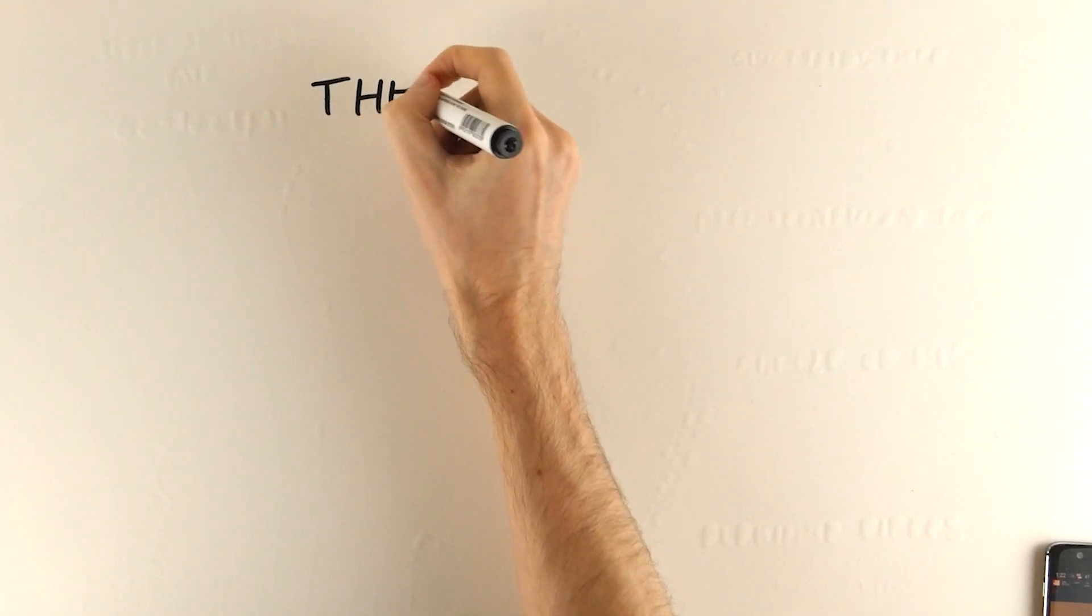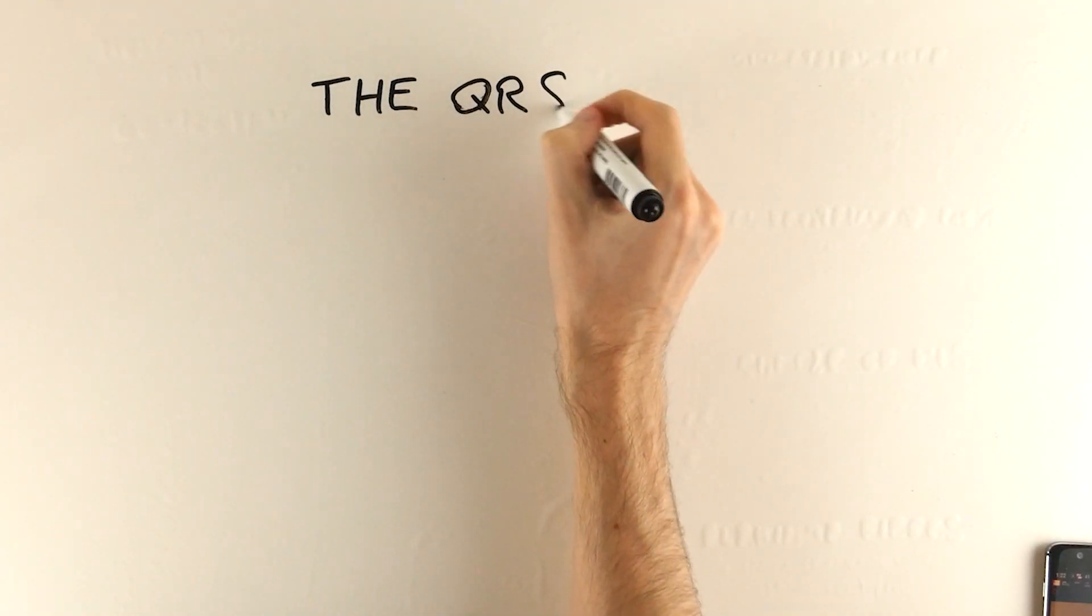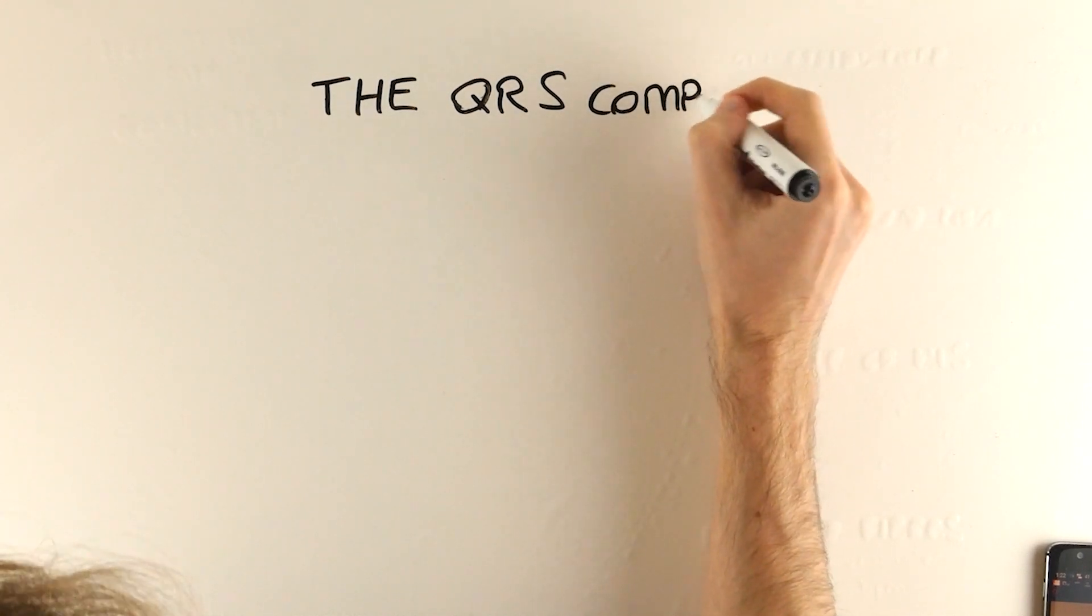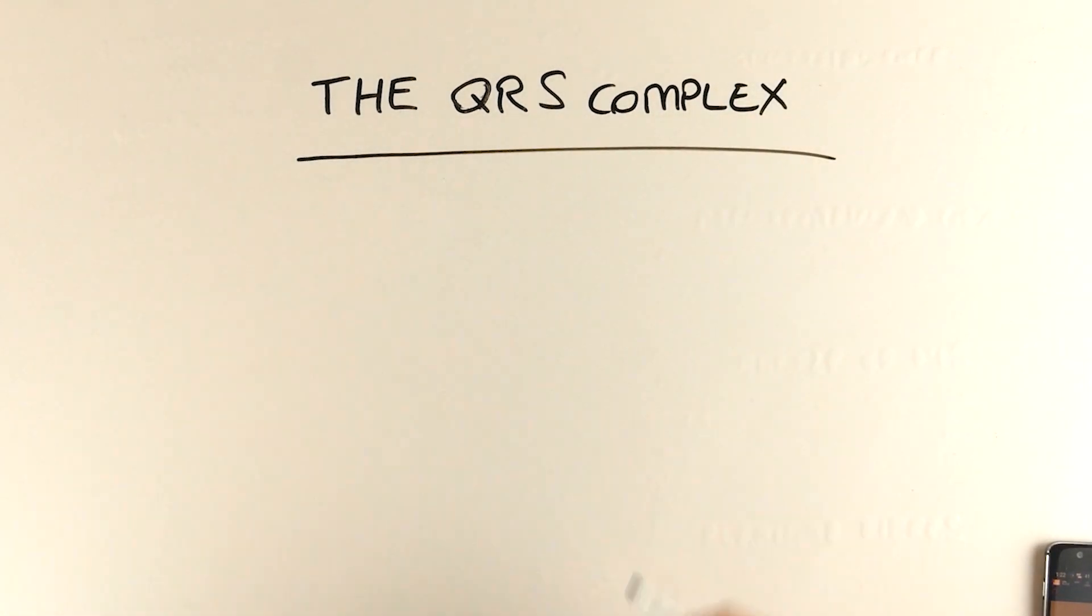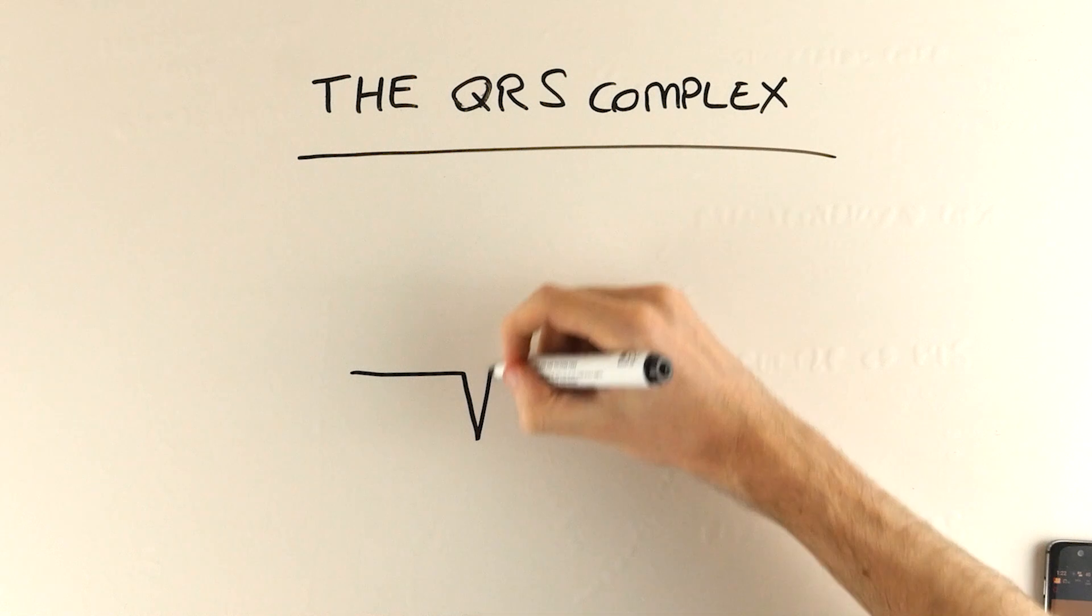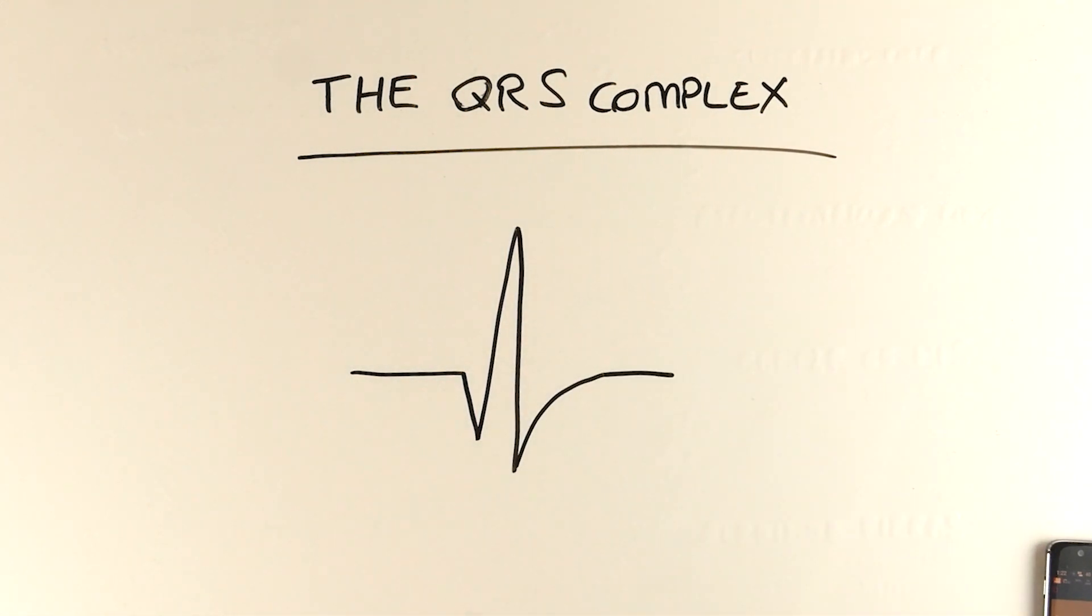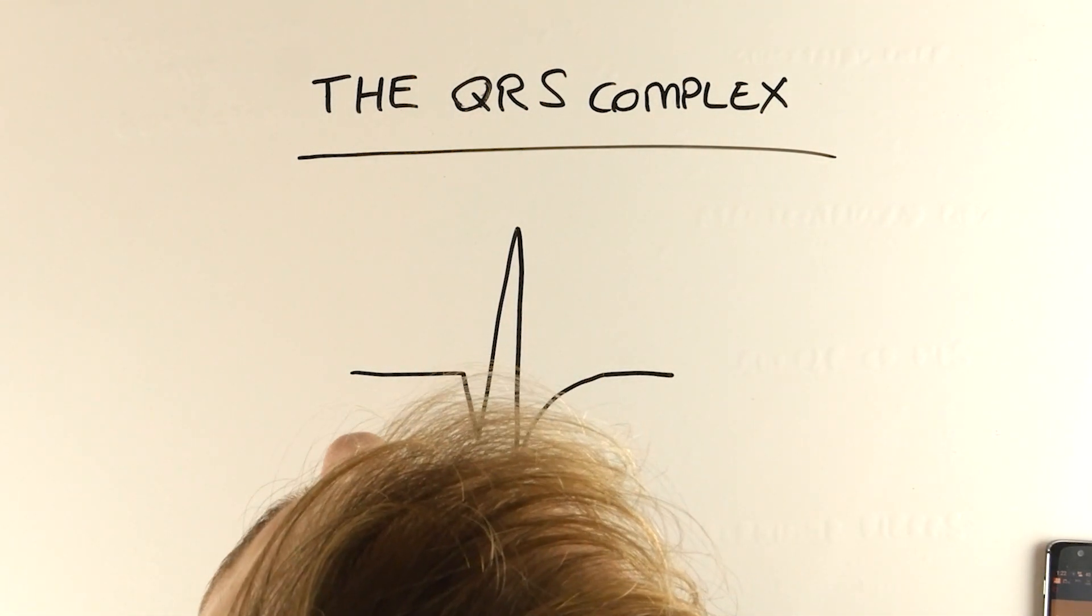This next set is collectively referred to as the QRS complex, which occurs when the heart muscle depolarizes and beats during systole.